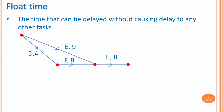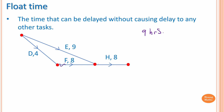Let's have a look at a section of a network. To start activity H, we need to complete activity E and activity F. To complete activity E, we need nine hours — assume these activities are in hours. To complete activity F, we need to complete activity D first. Activity F takes eight hours and activity D takes four hours, so completing D and F takes eight plus four, which is 12 hours.